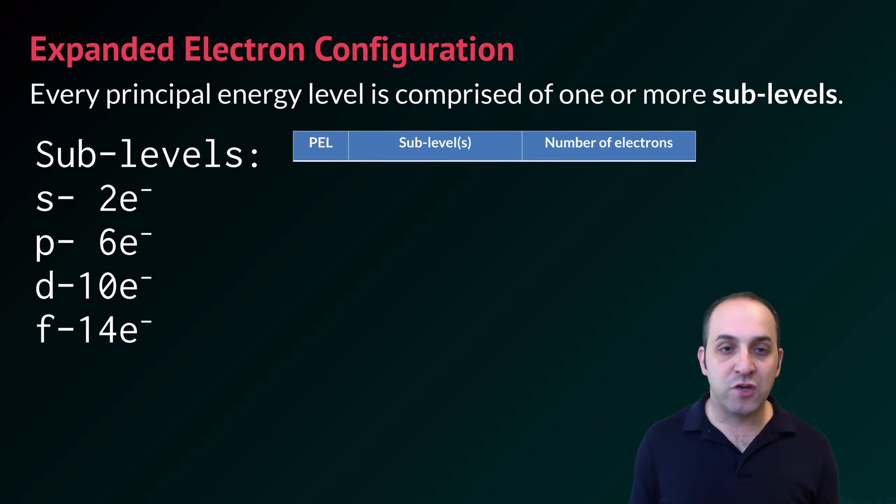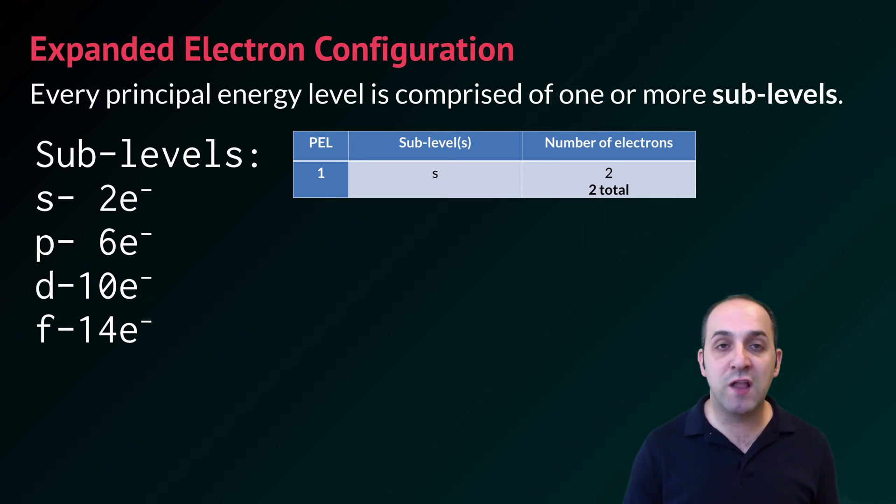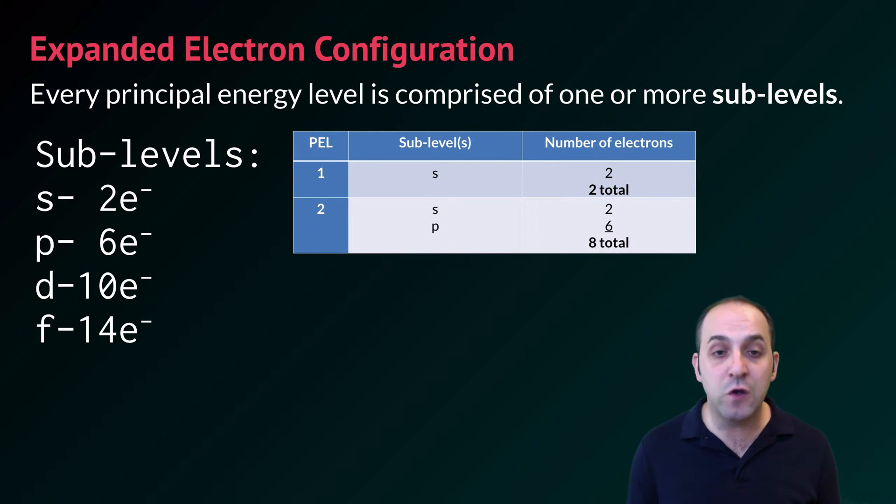The way this works with principal energy levels is shown on this chart. What we'll see here is the principal energy level, the sublevel or sublevels that that principal energy level has, and the number of electrons that can fit in each of those sublevels. Principal energy level one just has an S sublevel, and so that can fit only a total of two electrons. Principal energy level two has an S sublevel and a P sublevel, and so it can fit two electrons in the S and six in the P for a total of eight.